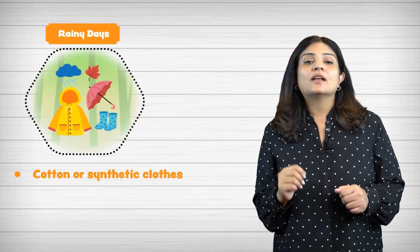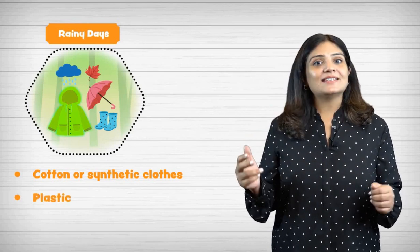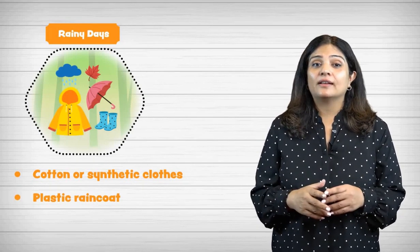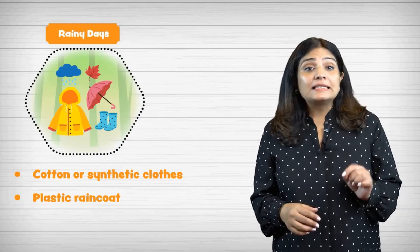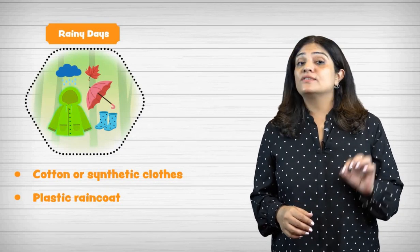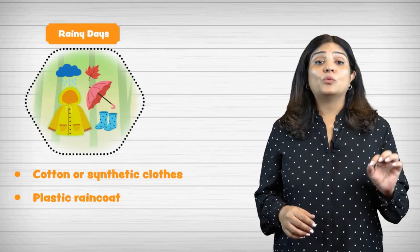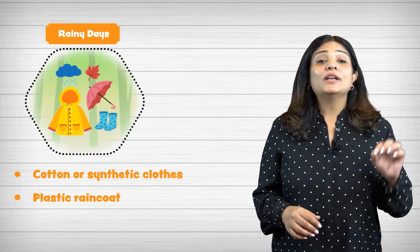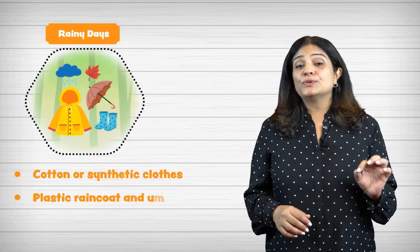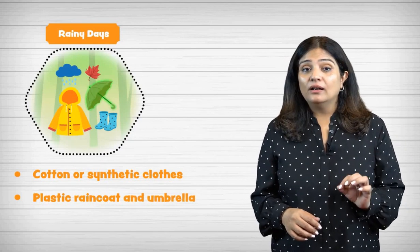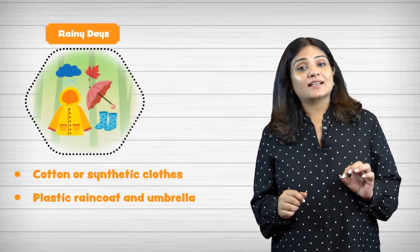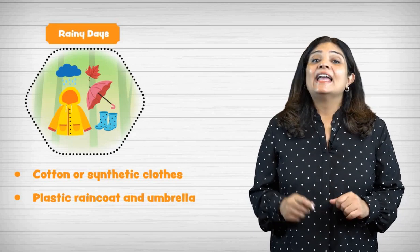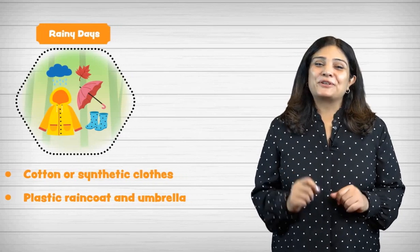During the rainy season, we wear cotton or synthetic clothes as they dry very fast. We often use a plastic raincoat when we go out in the rain, as plastic does not allow water to pass through. We also use an umbrella to protect ourselves from getting wet.